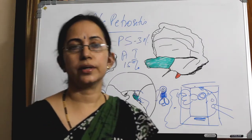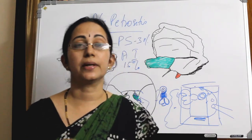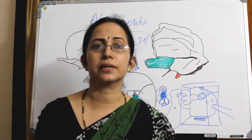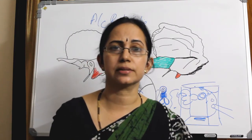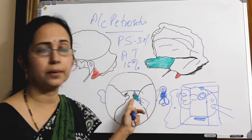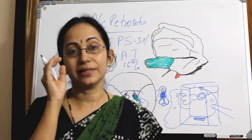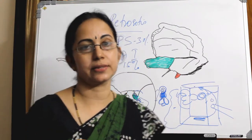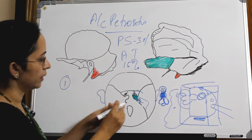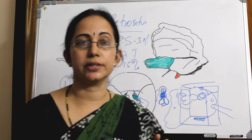I already said this complication is very rare, but if it occurs it becomes very dangerous. Why does it become so dangerous? What are the important structures in relation to the petrous apex? It is dangerous because of three reasons. One: the petrous apex has no natural drainage pathway.